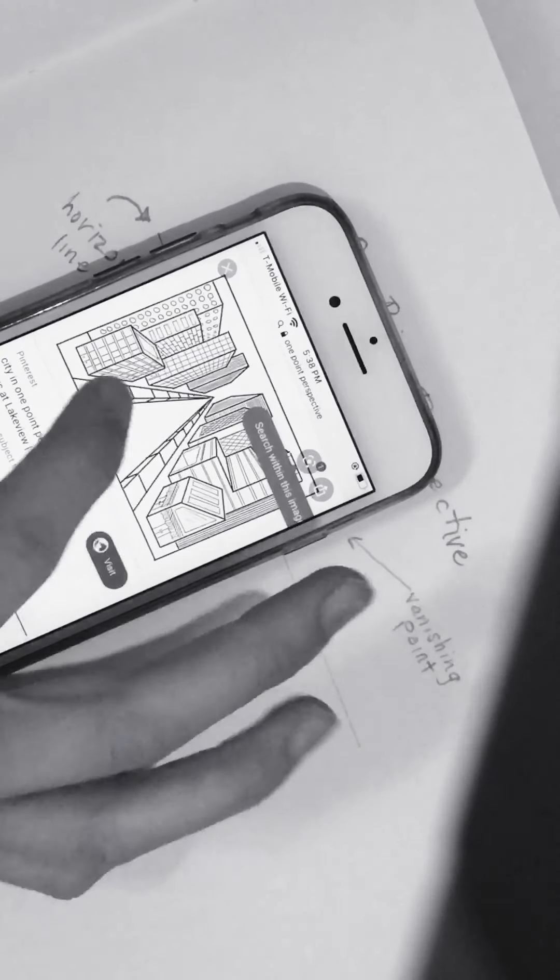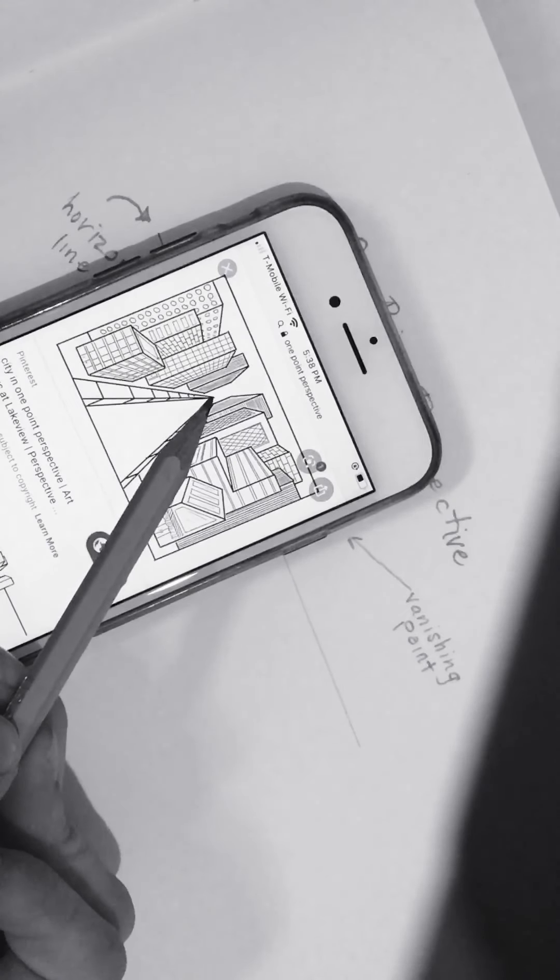Here's a great example. This here, our dot where the road ends is our vanishing point. The horizon line is along that vanishing point.